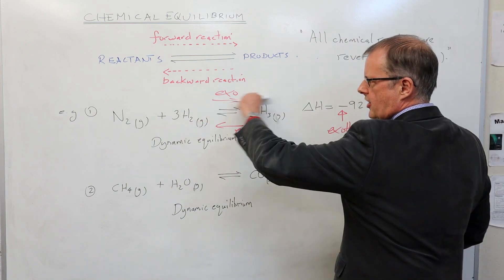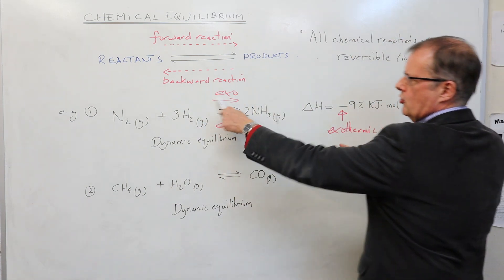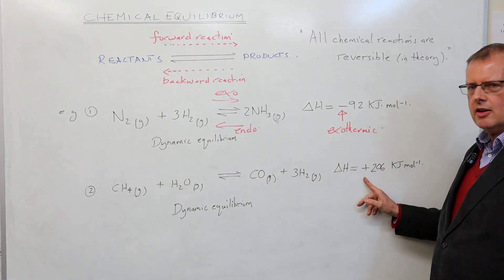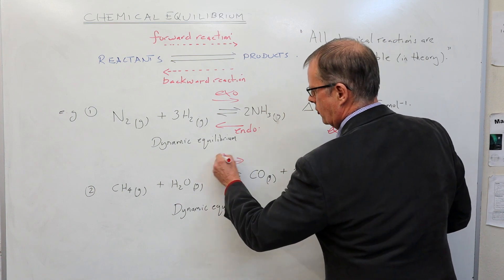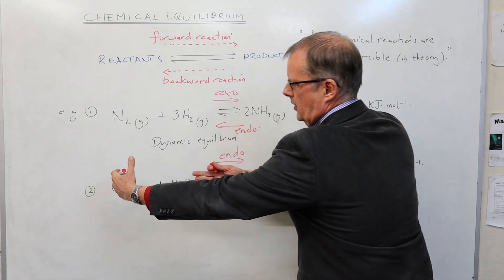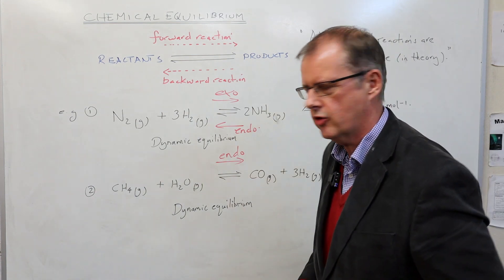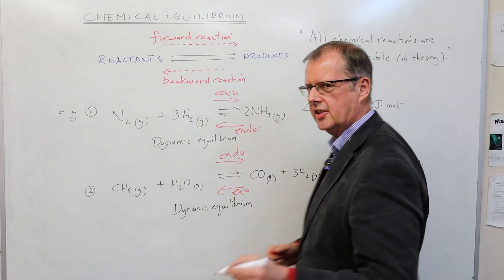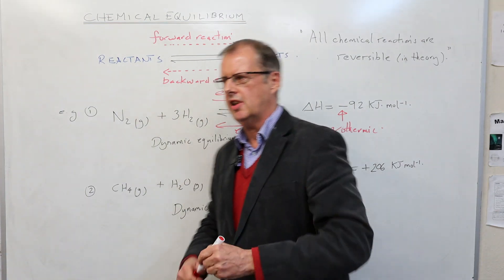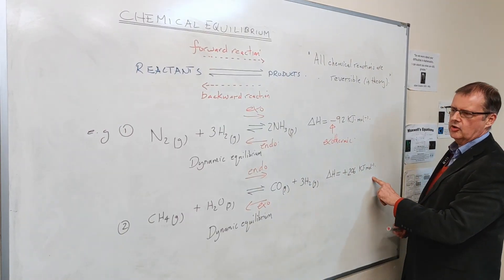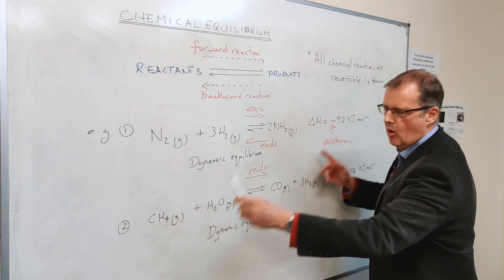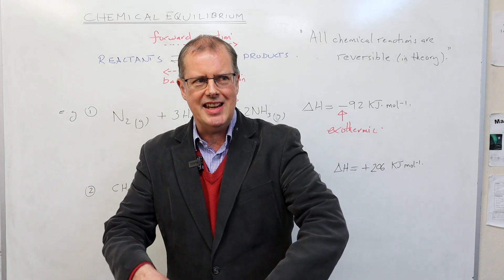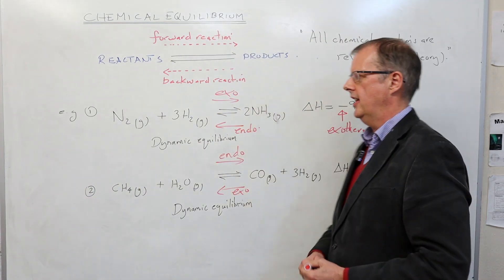So the negative value means the forward reaction is exothermic. The second reaction here has an endothermic forward reaction — moving from left to right is a cooling-down reaction, and the reverse process gives out heat. This one is plus 206 kilojoules per mole, meaning for a mole of the chemical equation as written, it takes in 206 kilojoules of energy.